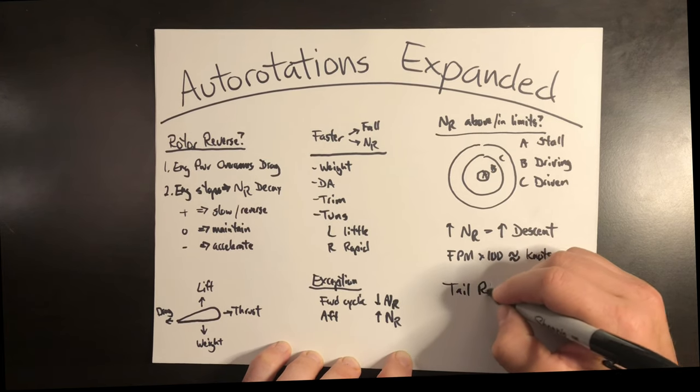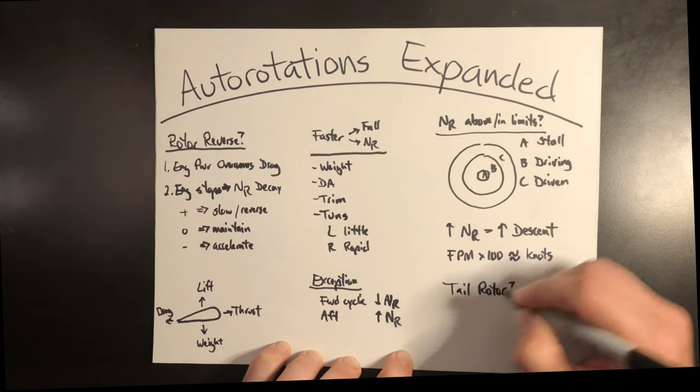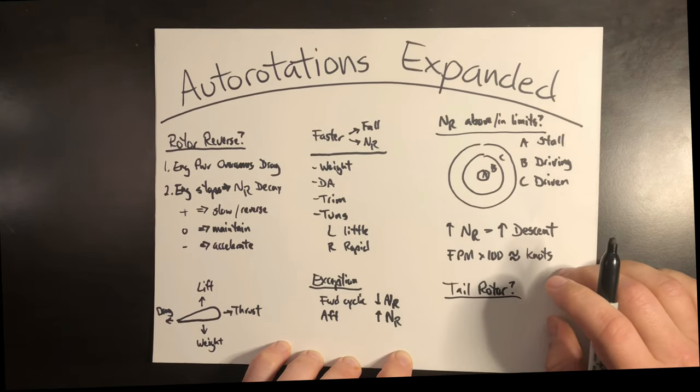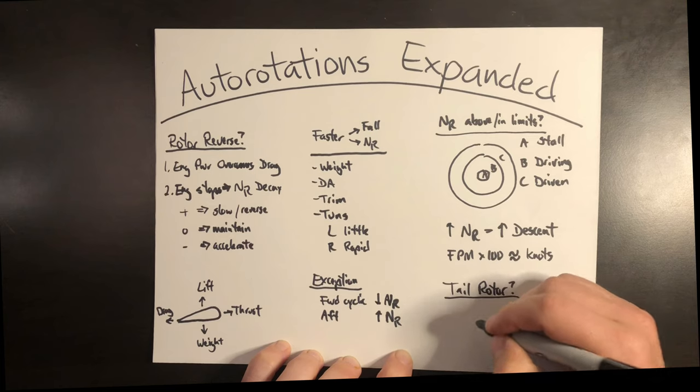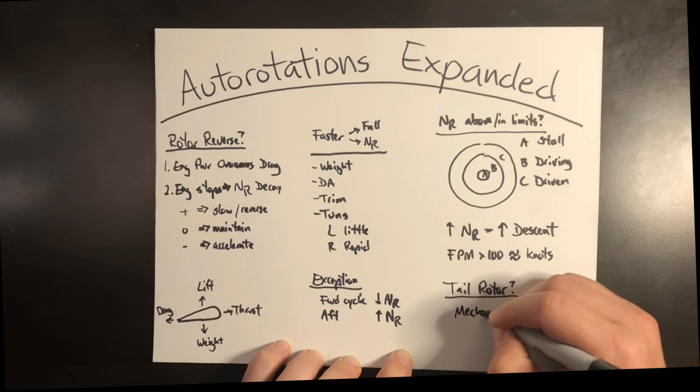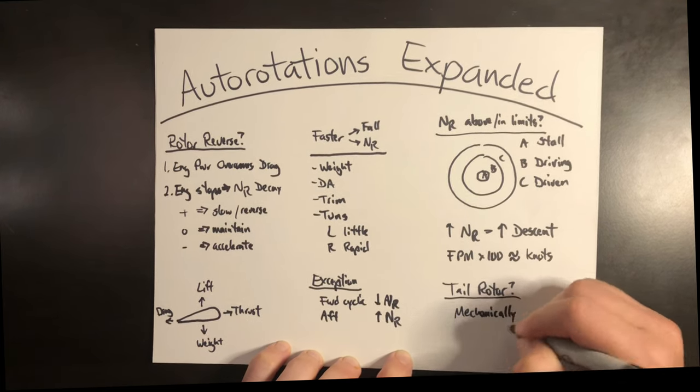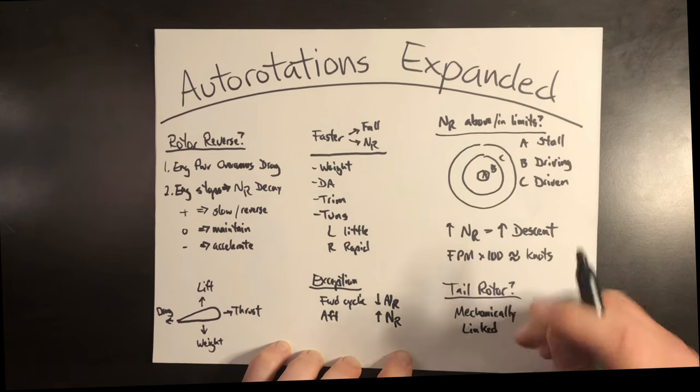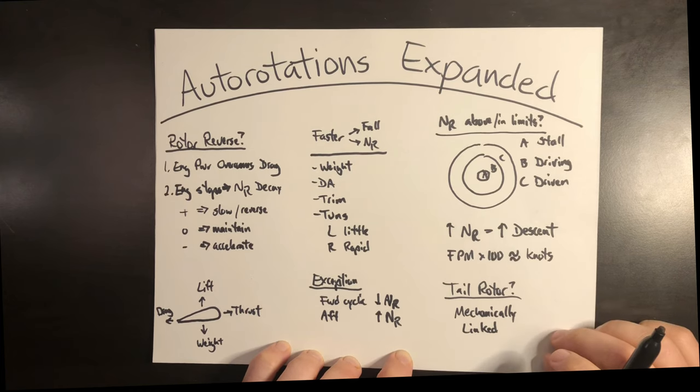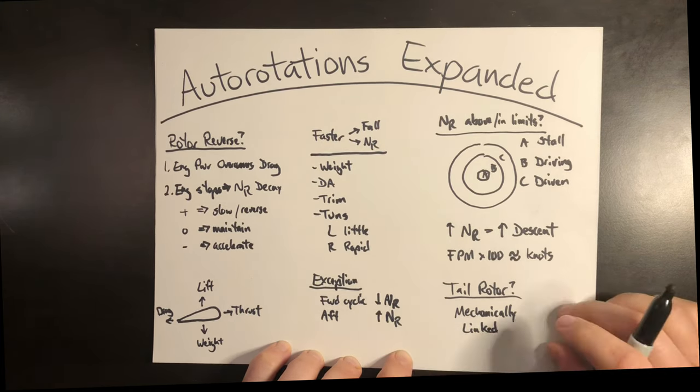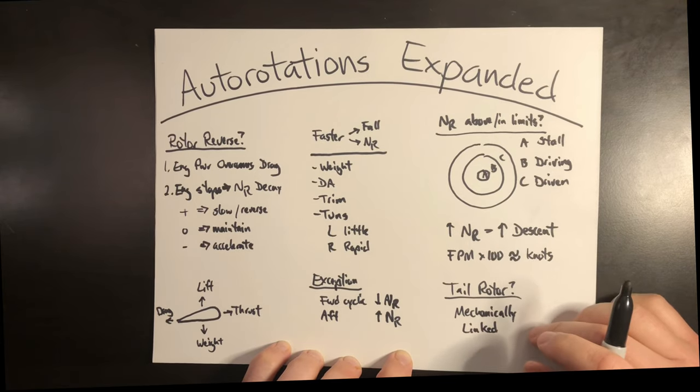Last question is what's going on with the tail rotor in an autorotation? Do you still have control? Is it still turning? Well, the tail rotor should be mechanically linked to the main rotor in the form of the drivetrain. So if the main rotor is within limits, the tail rotor should be within limits. If the main rotor is high, the tail rotor is high. If the main rotor is low, the tail rotor is low. So that should be no change to the authority as long as you're keeping the rotor within limits.